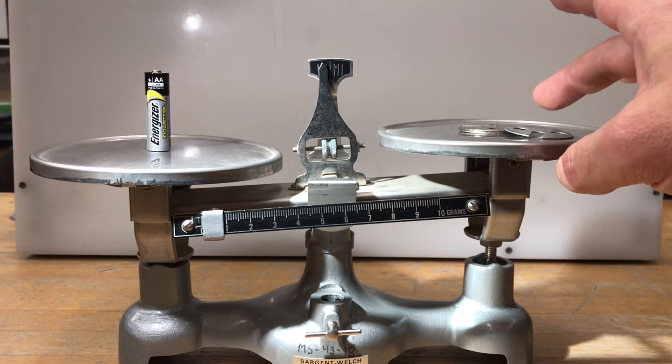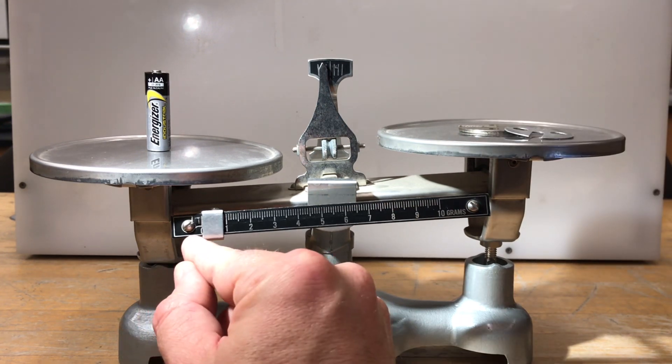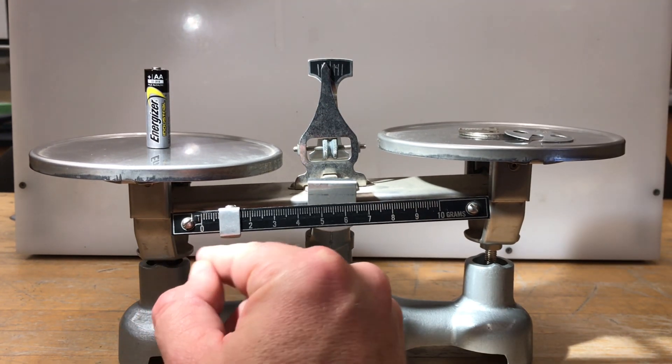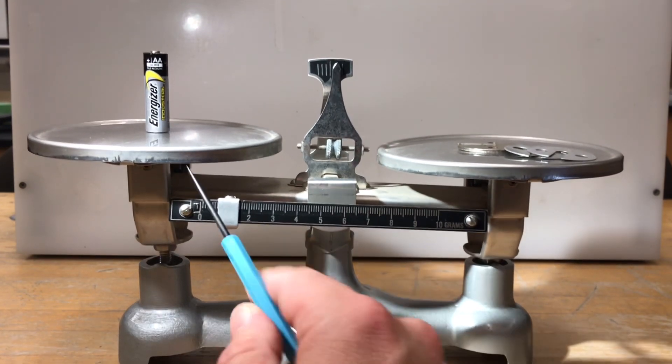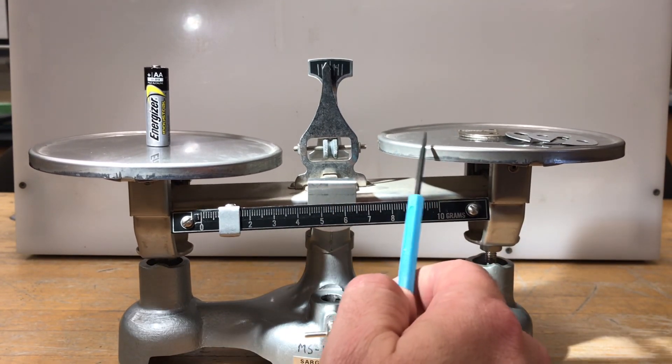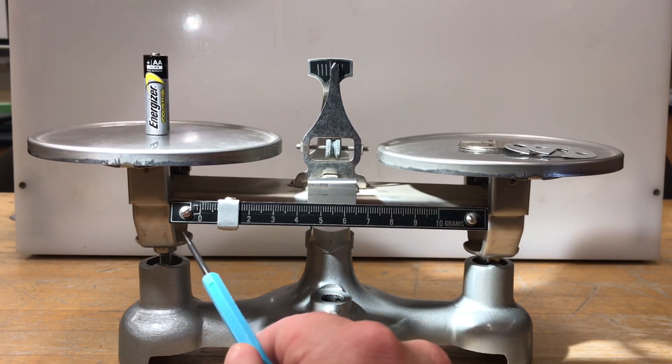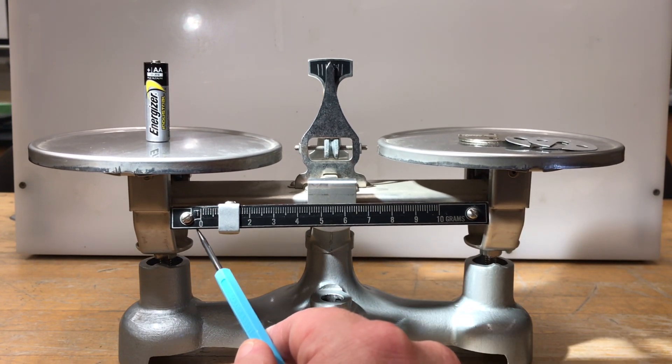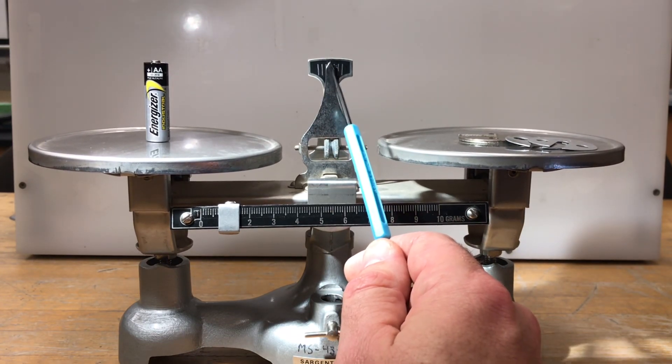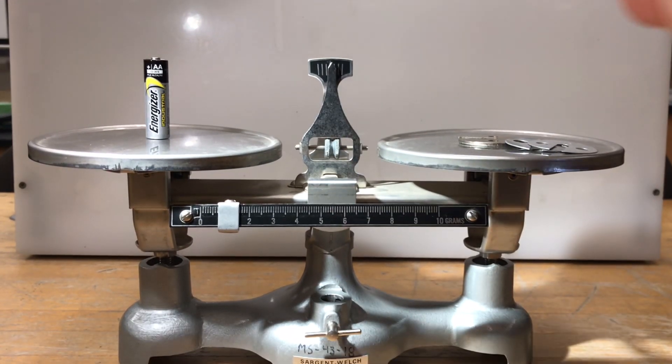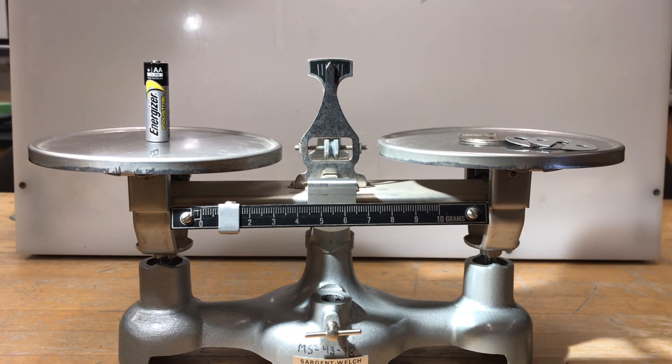If I nudge this over a little bit, I'll put the one back on and should get a balance pretty close to here. I'm looking at this pointer as an indicator of balance when this is centered, and we know that it's pretty well balanced.